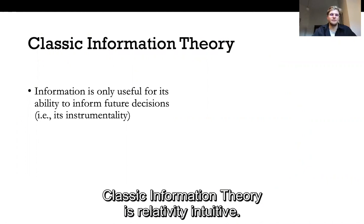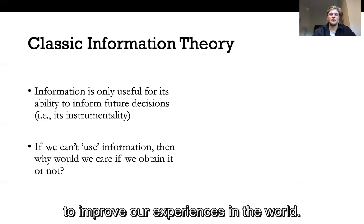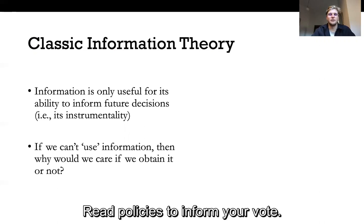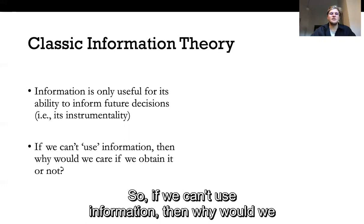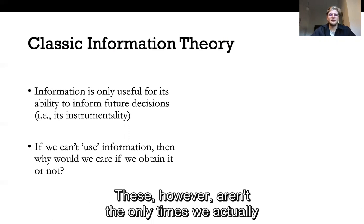Classic information theory is relatively intuitive. It posits that we seek information that we can use to improve our experiences in the world. So you might study formulas before a maths exam to get a better grade, read policies to inform your vote or read some expert reviews before buying a new laptop. So if we can't use information then why would we care if we obtain it or not?